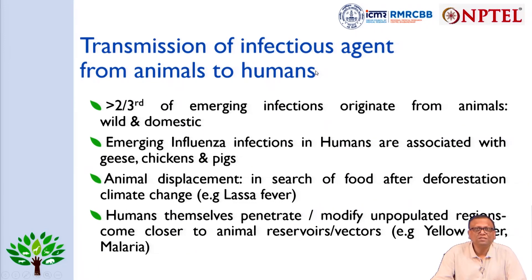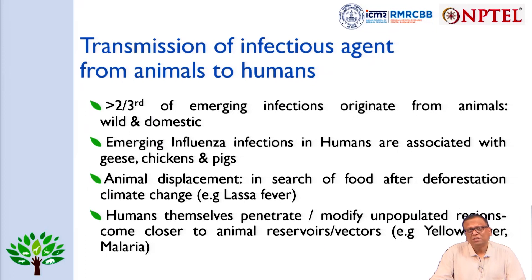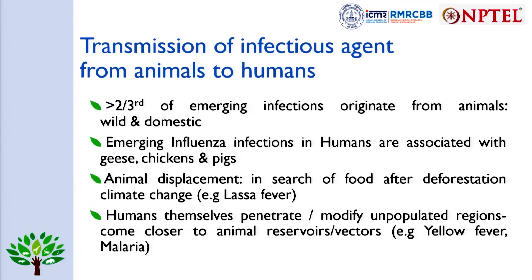About two-thirds of emerging infections originate from animals, both wild and domestic. SARS-CoV-2, the COVID-19 pandemic, is a live example that has provided many lessons to people across the globe. Emerging influenza infections in humans are associated with geese, chicken, and pigs. Animal displacement — animals searching for food after deforestation and climate change — is another driver, as seen with Lassa fever. Humans themselves penetrate or modify unpopulated regions and come closer to animals or their reservoirs, as seen with malaria and yellow fever.